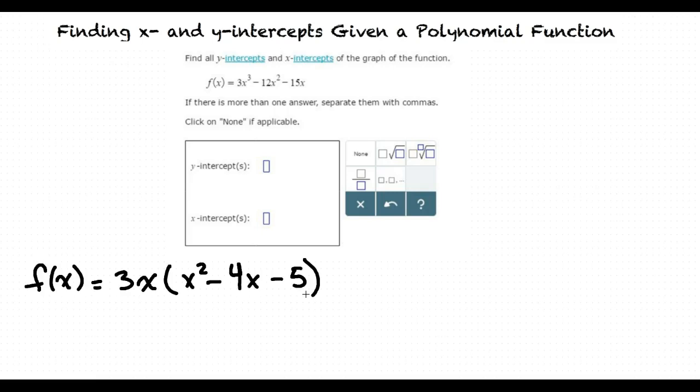If we factor out 3x, this results in 3x times x squared minus 4x minus 5. However, if we factor even further, we get 3x times (x minus 5) times (x plus 1).